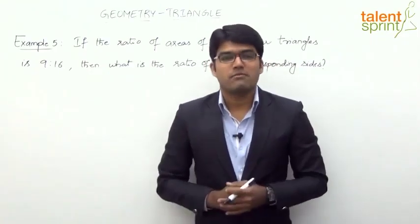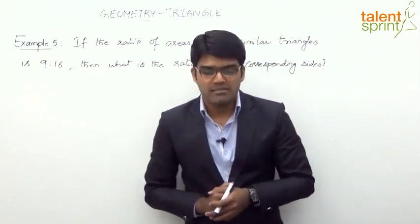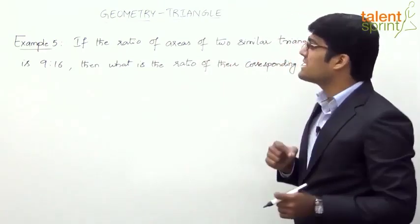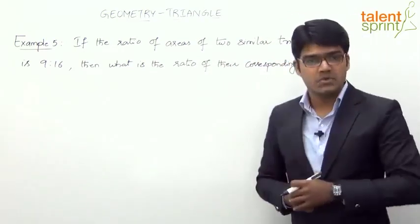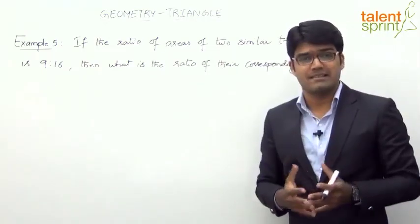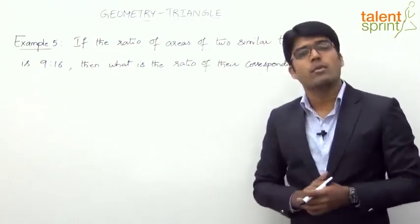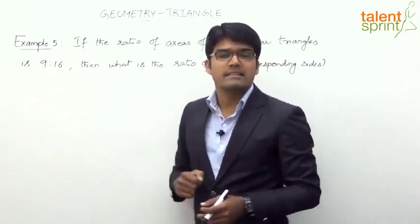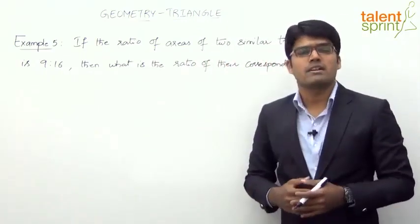Let us now look at example number 5, which is also based on the concept of similar triangles. The question says: if the ratio of the areas of two similar triangles is 9 is to 16, then what is the ratio of their corresponding sides?